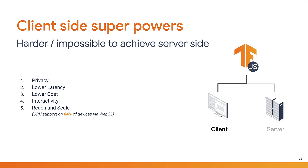As this course is primarily about machine learning in the browser, let's talk about client-side superpowers that can only be achieved by running in the web browser. First is privacy. As the model runs entirely on the client machine, no data is ever sent to a third-party server, maintaining data privacy for the end-user. This is particularly important for industries where it might be a requirement not to transfer data to a third party, and you get that privacy for free with TensorFlow.js.